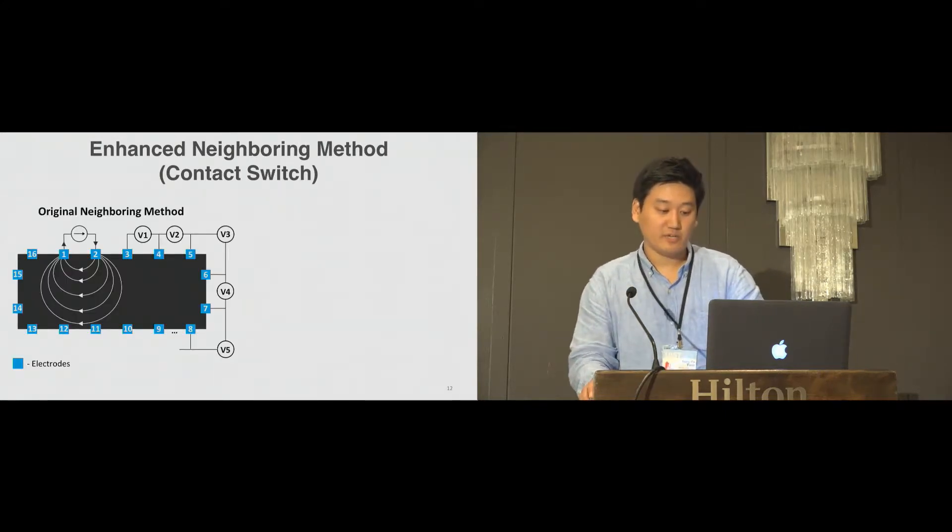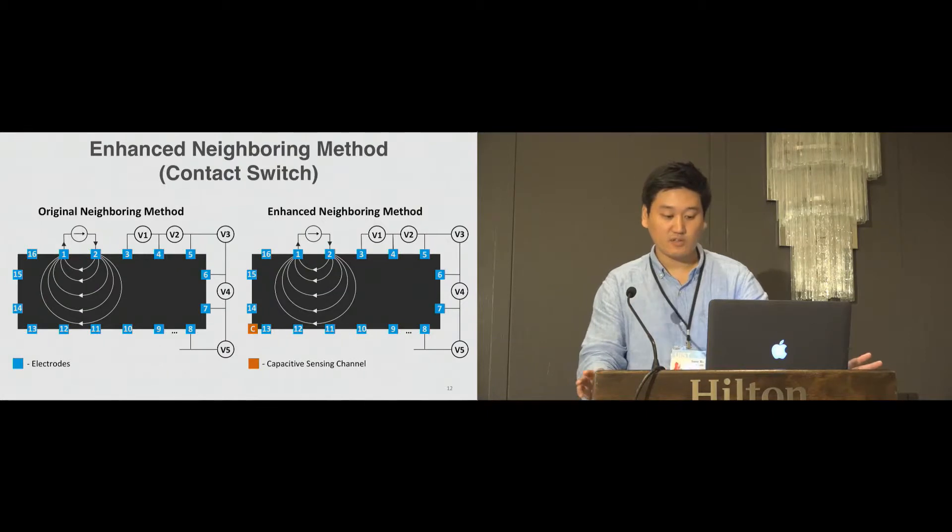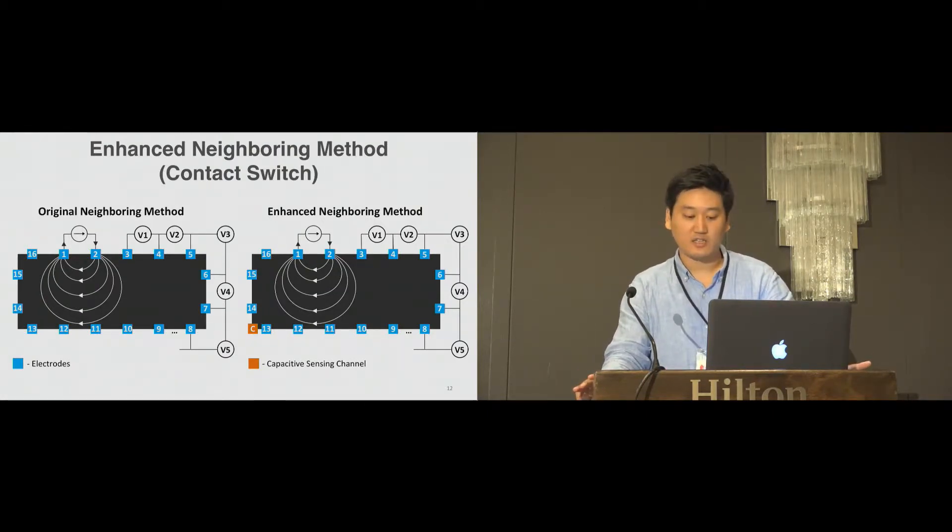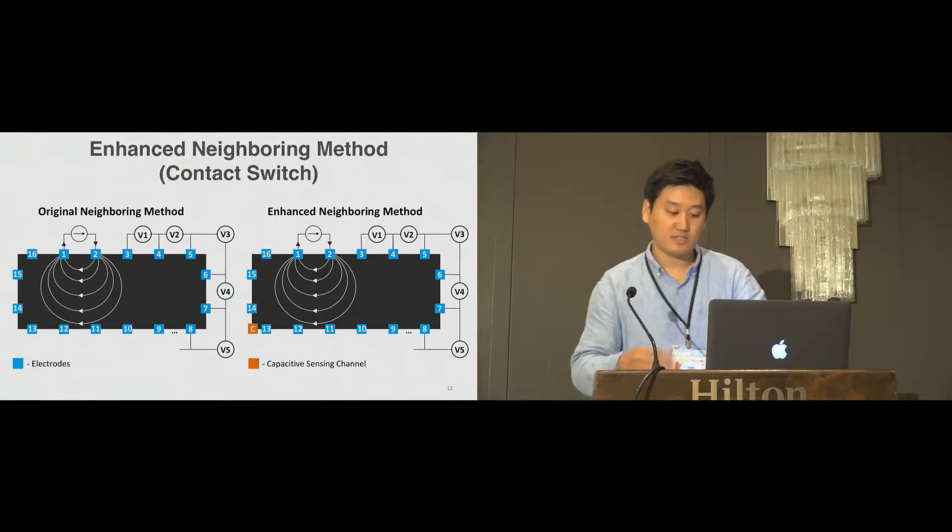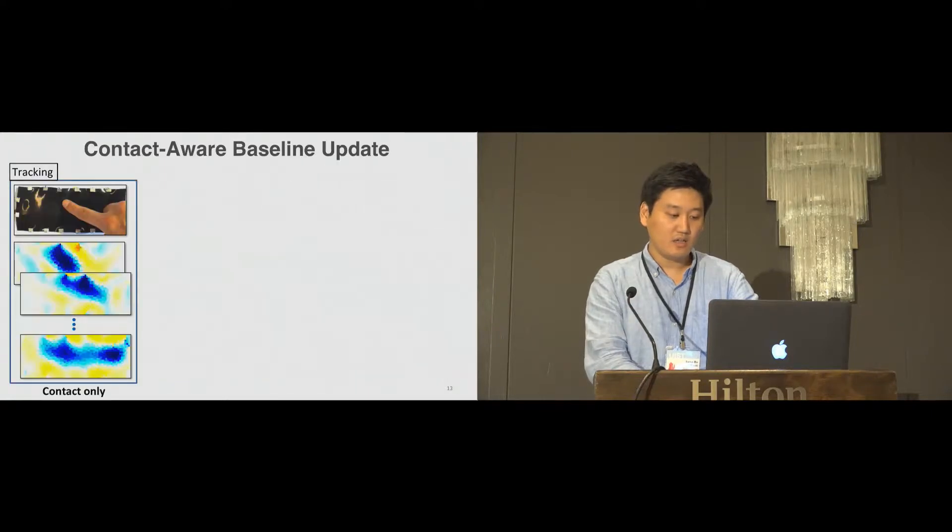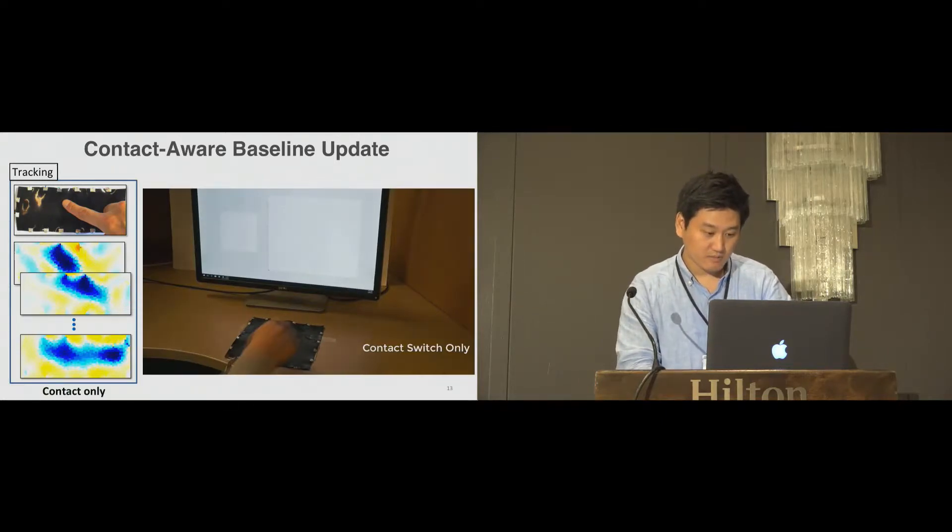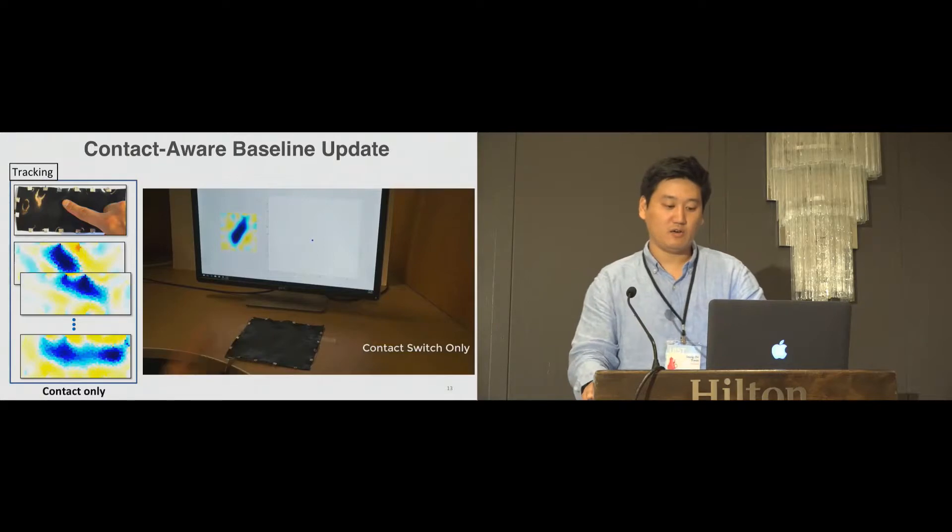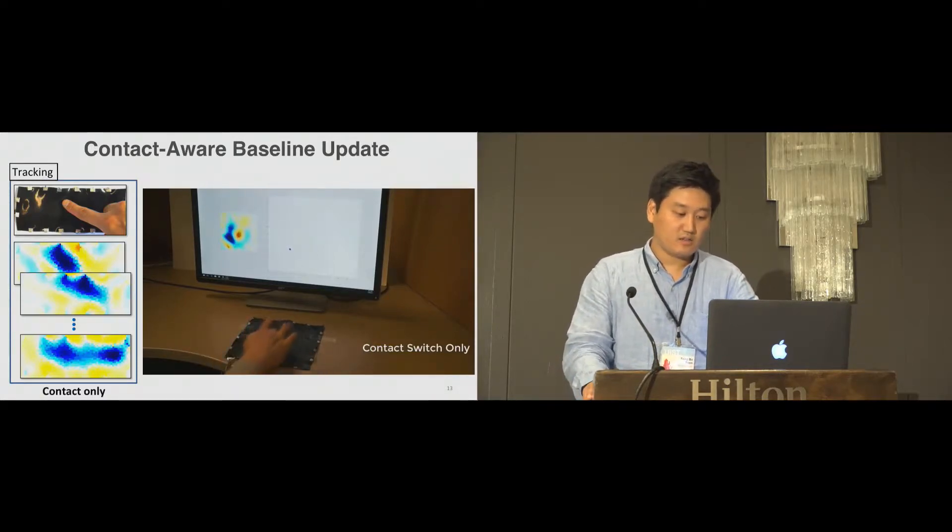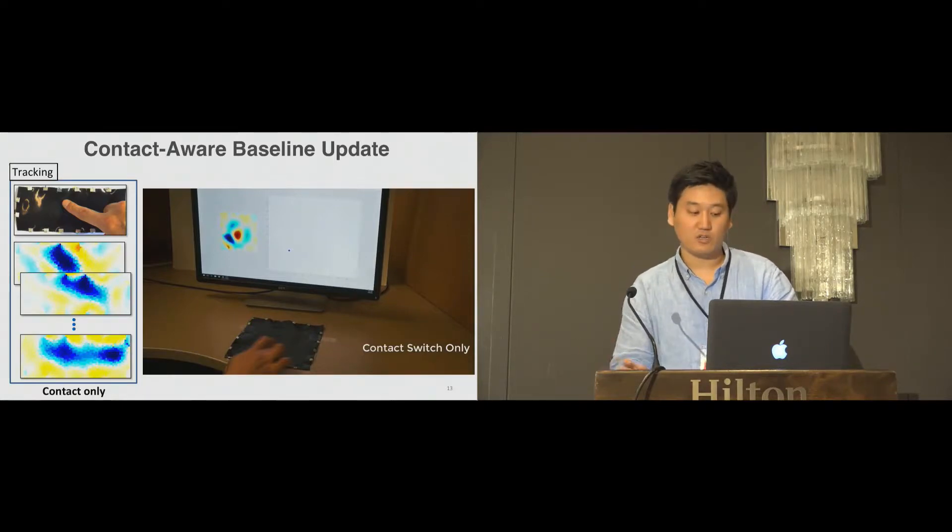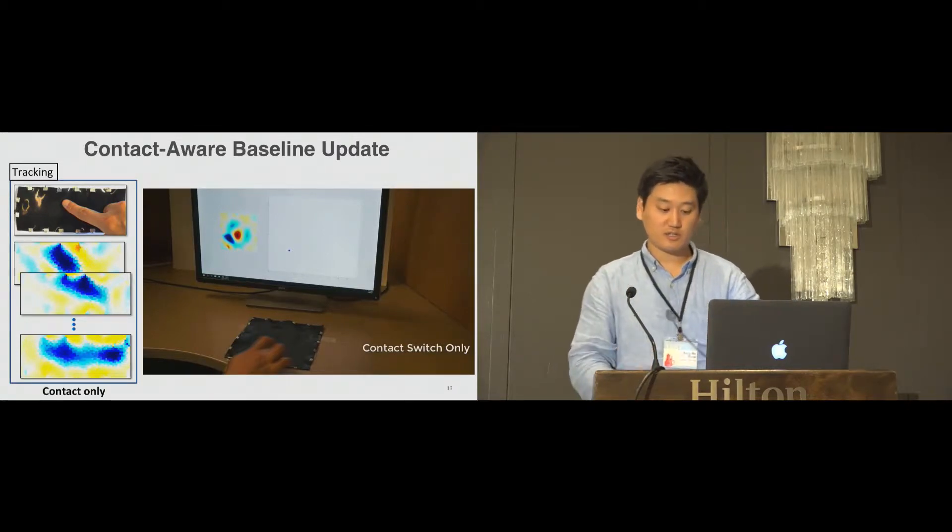Traditionally in EIT, the neighboring method has been utilized for measuring resistance of the material. Current is fed through two electrodes, and the voltage differential is measured successfully throughout the adjacent electrode pairs. To entitle the sensor with fingertip contact awareness, we added a capacitive sensing channel to check the presence of fingertip contact. This allows the system to update the baseline only during the presence of fingertip contact. However, there is another issue to fully provide continuous contact sensing. As you can see from this video, even with awareness on fingertip contact, the residual deformation makes it hard to get dynamic contact localization. Therefore, it is also crucial to detect the movement of the fingertip.